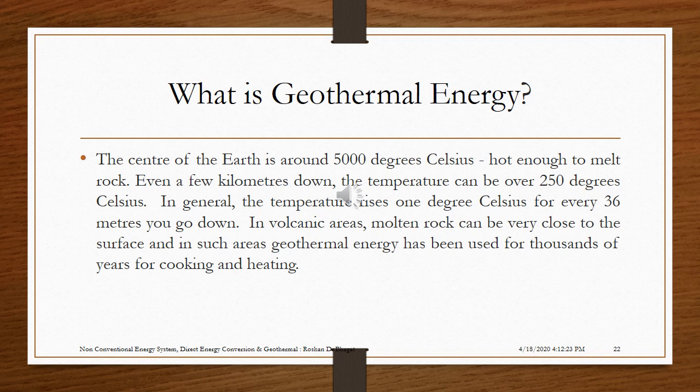The center of the earth is around 5000 degrees Celsius — hot enough to melt rock. Even a few kilometers down, the temperature can be over 250 degrees Celsius. In general, the temperature rises 1 degree Celsius for every 36 meters you go down. In volcanic areas, molten rock can be very close to the surface, and in such areas geothermal energy has been used for thousands of years for cooking and heating.